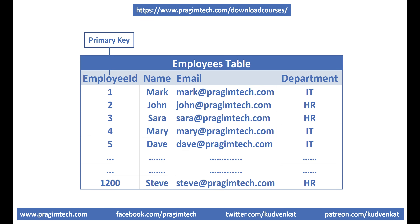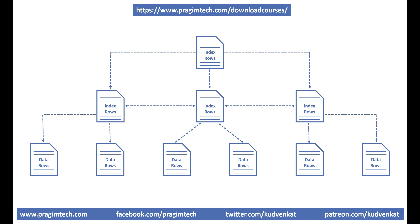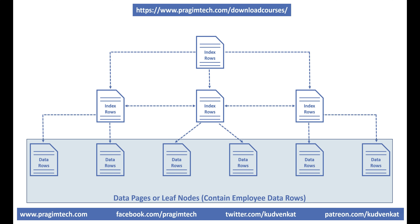Consider this employees table. Employee ID is the primary key, so by default a clustered index on the employee ID column is created. This means employee data is sorted by employee ID and physically stored in a series of data pages in a tree-like structure. The nodes at the bottom of the tree are called data pages or leaf nodes and contain the actual employee data rows, sorted by employee ID because employee ID is the primary key.